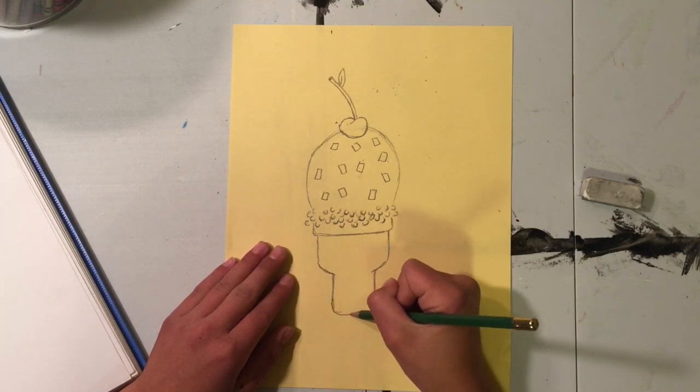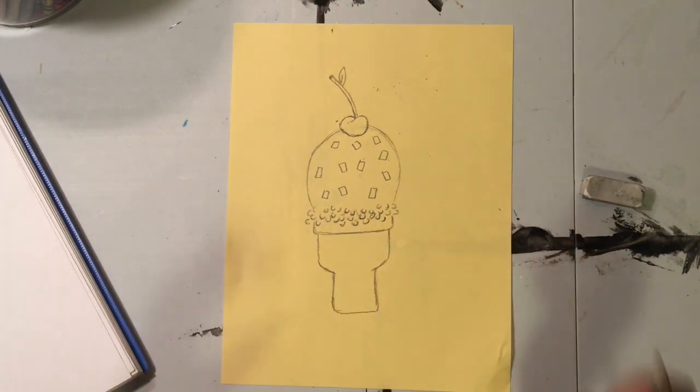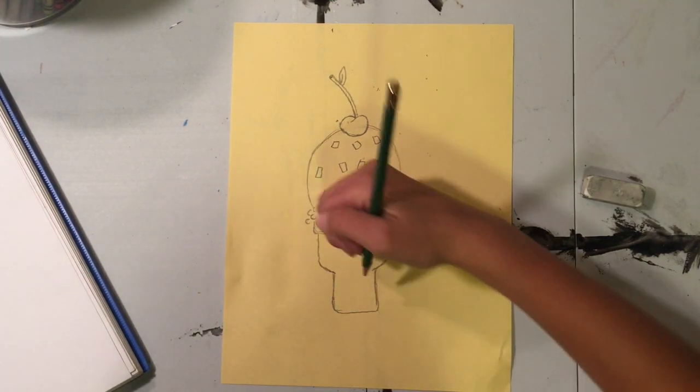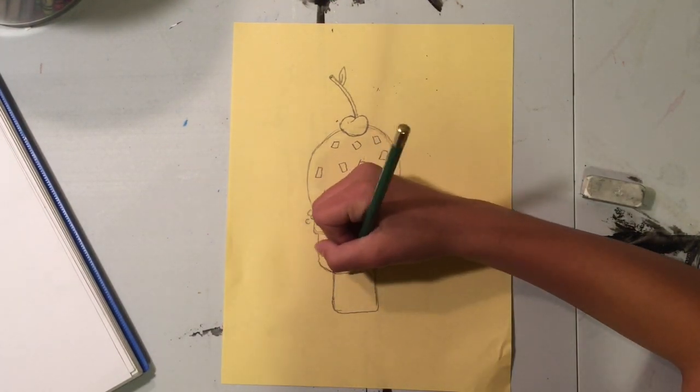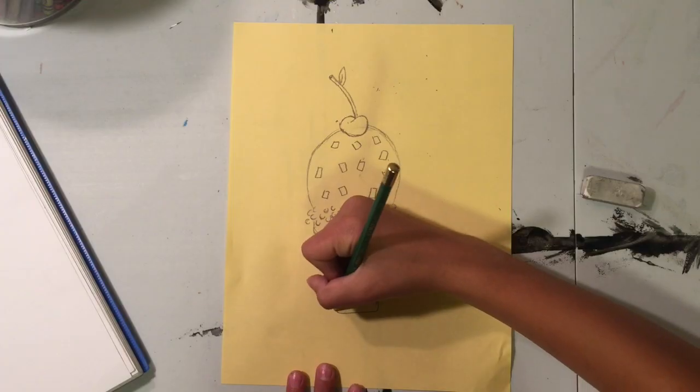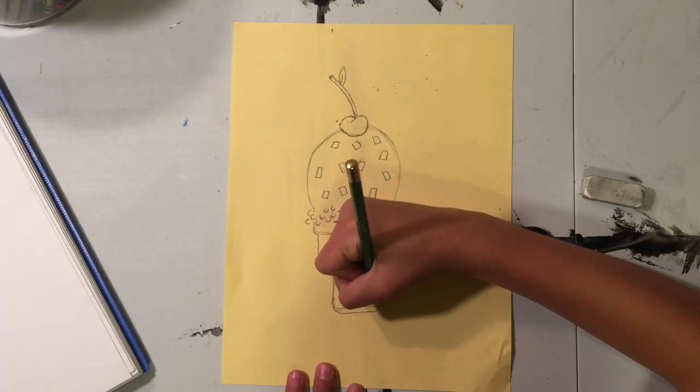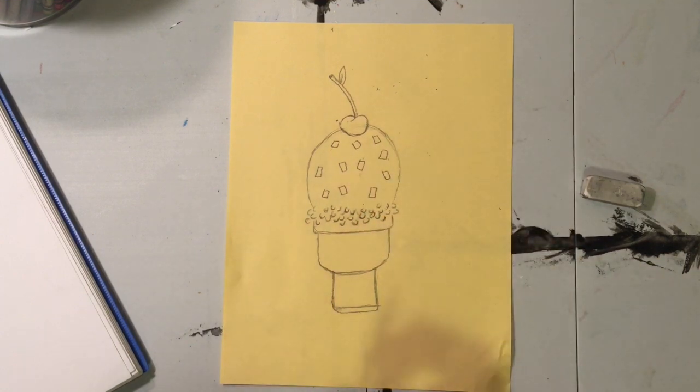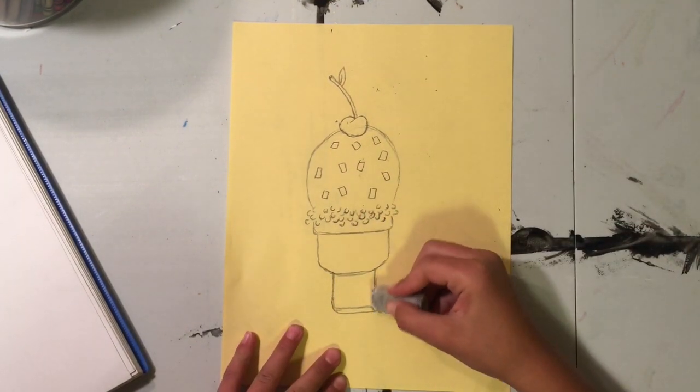And then at the bottom you add the little part that you hold on to. You can make it as long as you want. I'm just making mine like a little short cone. And then you add a line here and that's your ice cream cone. You add another line here because normally there's a wrapper on your ice cream cone.